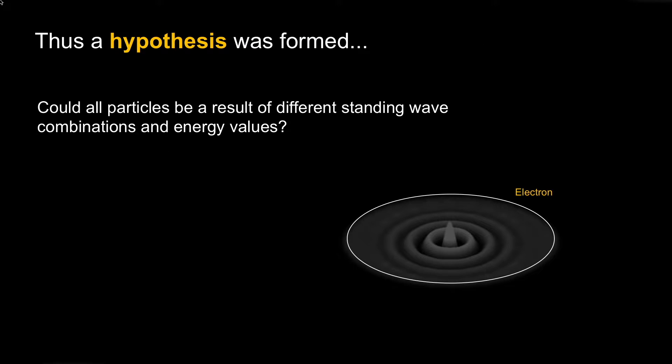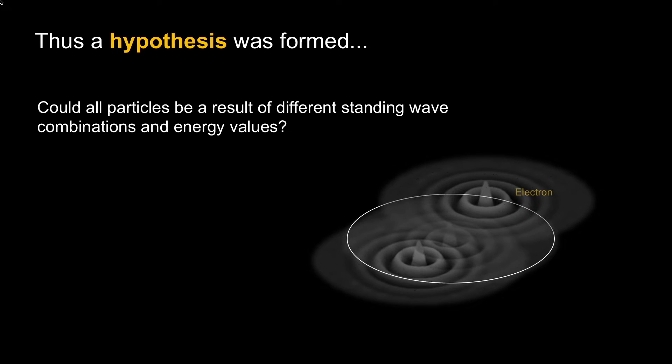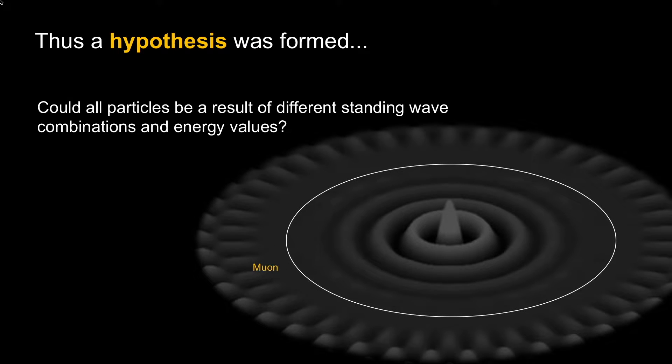A hypothesis was formed: could all particles be a result of different standing wave combinations and energy values, such as if that was the electron? What if particles collided, merged, and their standing wave structure changed? Would the energy change and would it be considered a different particle?